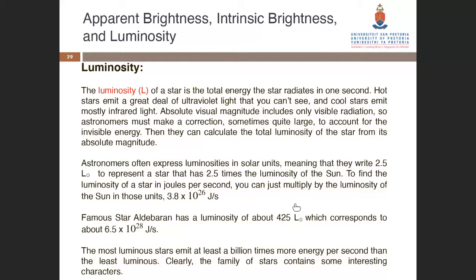Can two stars have the same apparent visual magnitude but different luminosity or absolute visual magnitude? Yes, absolutely true. The apparent visual magnitude is how the brightness looks from Earth; but using absolute visual magnitude, if you place those two stars at a distance of 10 parsecs, you can see there's a difference in their luminosity.